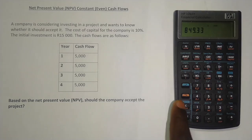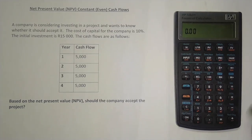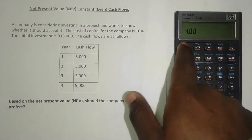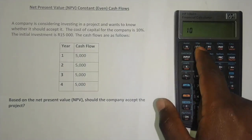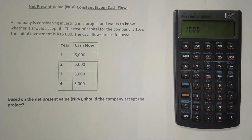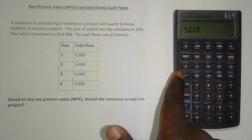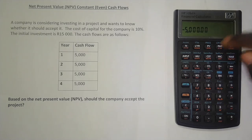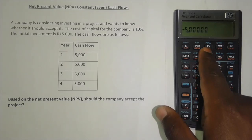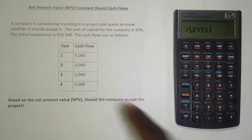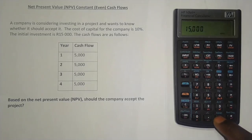Let me show you the second way. Press the orange button and press C to clear the memory. The number of years is 4, so press 4 then N. The interest rate is 10, so press 10 then I/YR. Then enter the cash flows of 5,000 — but this time as a negative, so press 5,000, then plus/minus, then PMT. The reason for the negative is so that the present value appears as a positive, since PV and PMT have opposite signs. Then press PV and it gives 15,849 rand 33 cents.